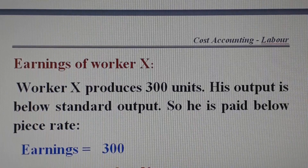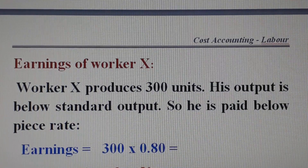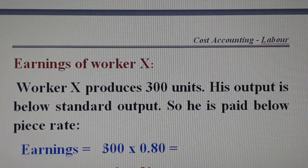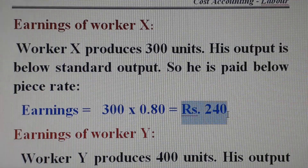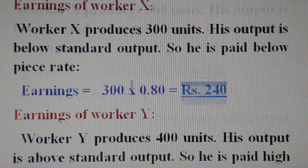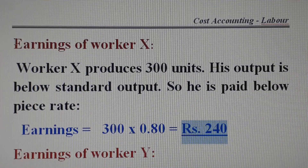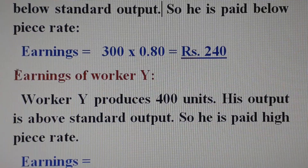Since worker X is below standard, he is paid at the below piece rate. His earnings are calculated as 300 units multiplied by Rs. 0.80, which equals Rs. 240. So the total earnings of worker X amounts to Rs. 240.